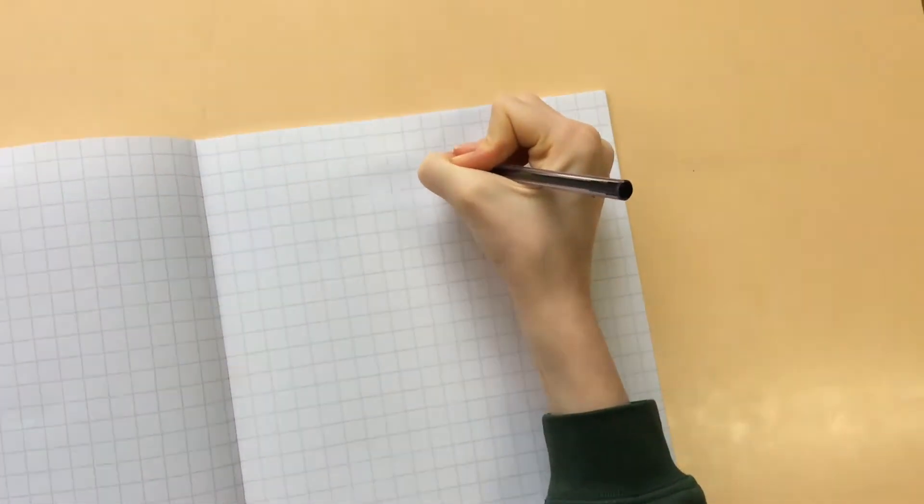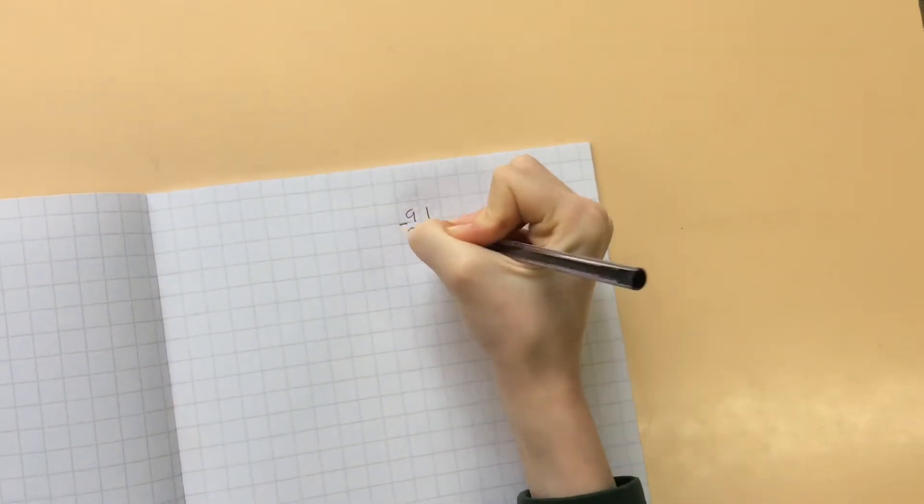Sometimes this method isn't as simple. For example, 91 take away 25.